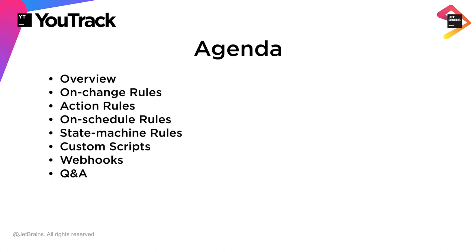After the overview, we'll work with a relatively basic but very popular use case and show you how we can support this use case by writing different types of rules. We'll provide examples of on-change rules, action, on-schedule, state machine rules, and show you how you can support each of these rules with custom scripts. The last thing we'll do is provide an example that uses webhooks to integrate with an external application.